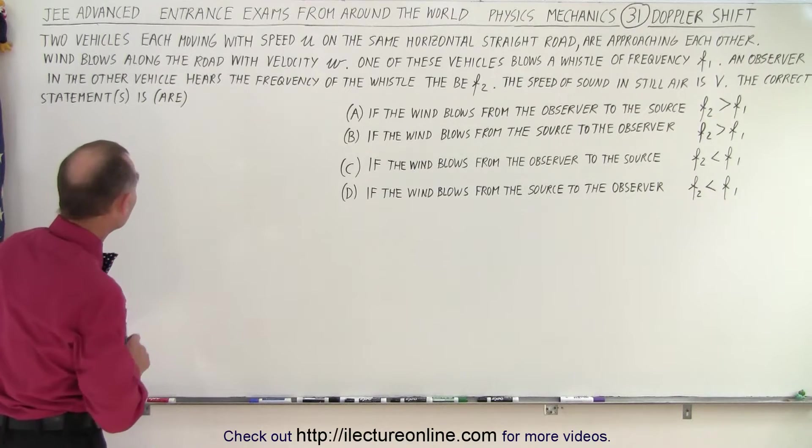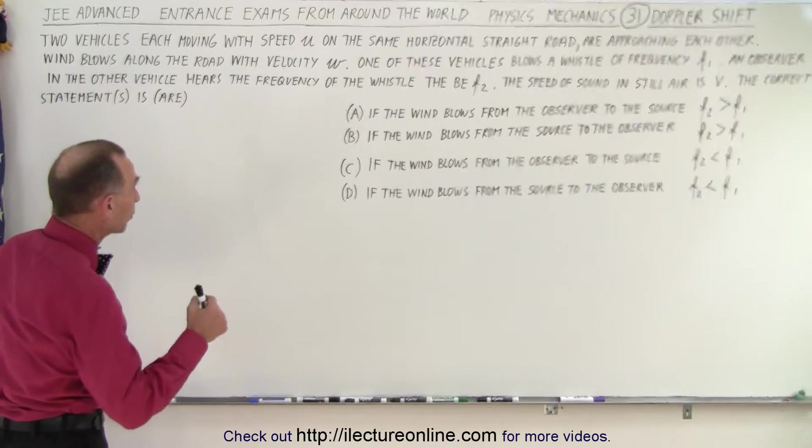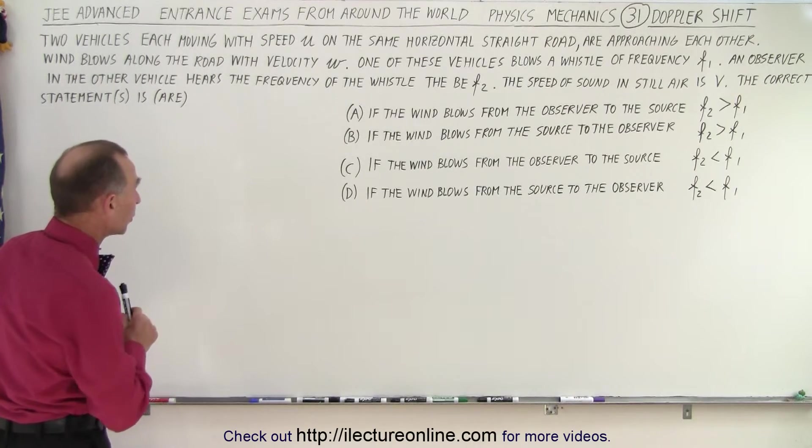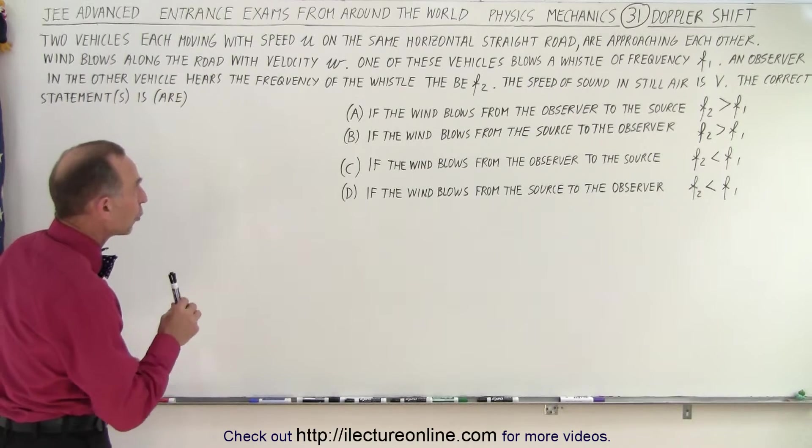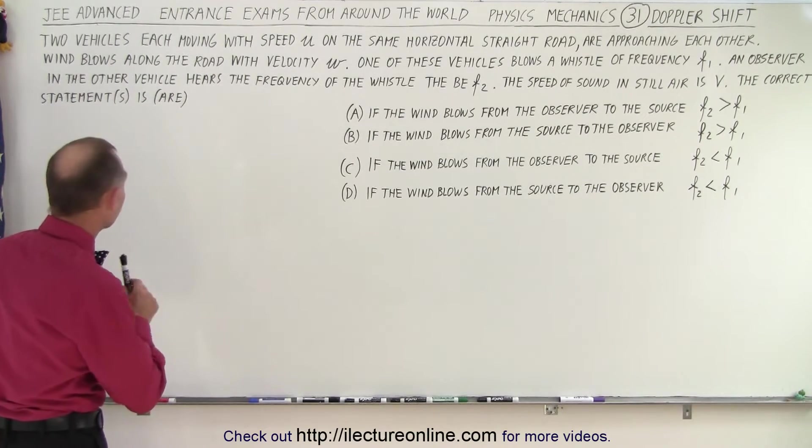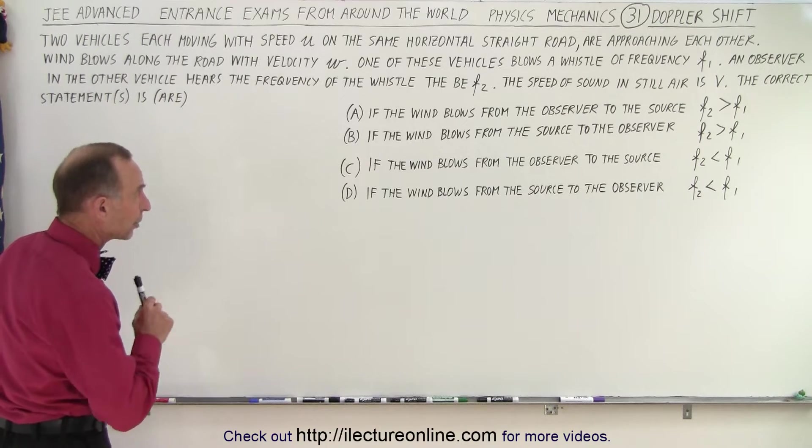It says two vehicles each moving with speed u on the same horizontal straight road are approaching each other. Wind blows along the road with velocity w. One of these vehicles blows a whistle of frequency f1. An observer in the other vehicle hears the frequency of the whistle to be f2. The speed of sound in still air is capital V.